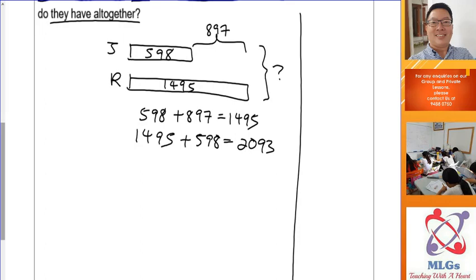Whatever answers you have found, add on to your model. These are good drawing habits, because in harder models you have more steps and every number you find, you build onto your model, and your model will become clearer and clearer. Indicate your answer — ANS — at the bottom right-hand corner: 2,093 stamps. We have solved the first problem using the comparison model.